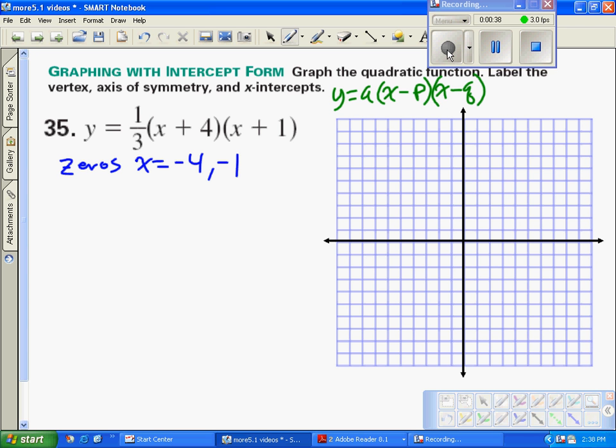So we're going to plot those points, negative 4, negative 1. Negative 4 is right there.